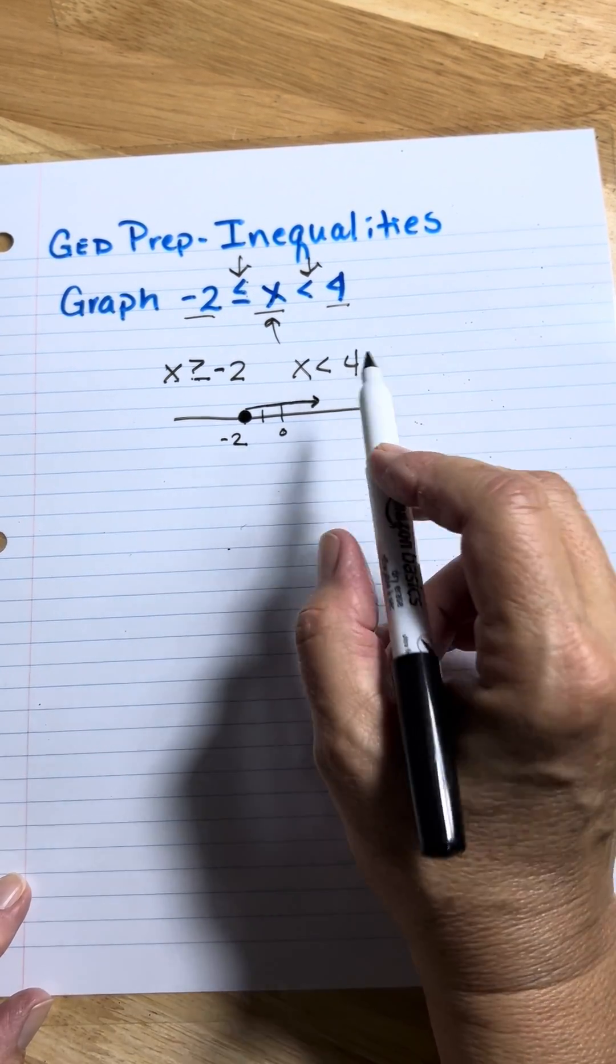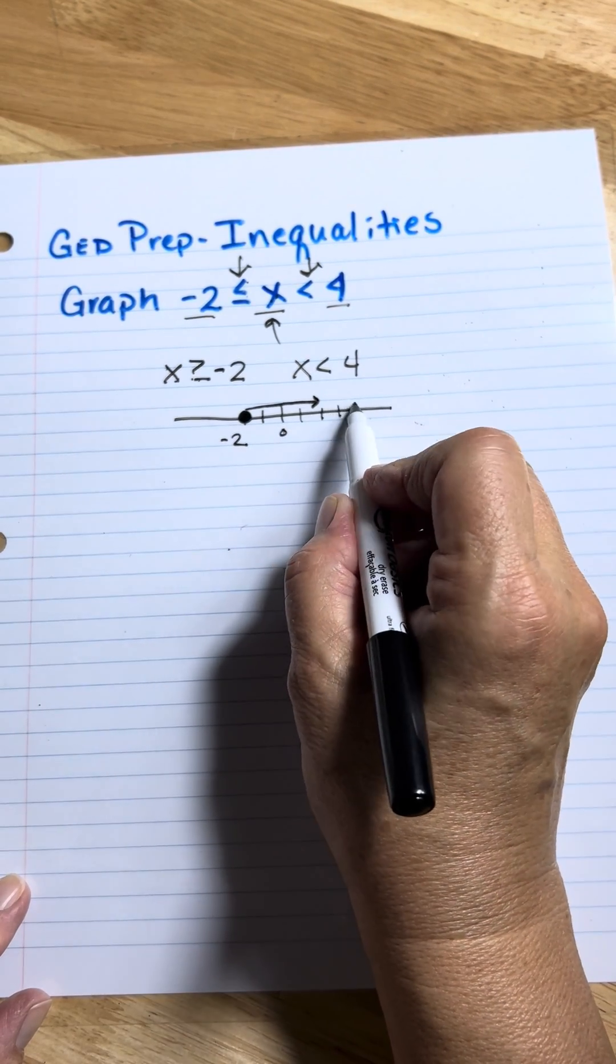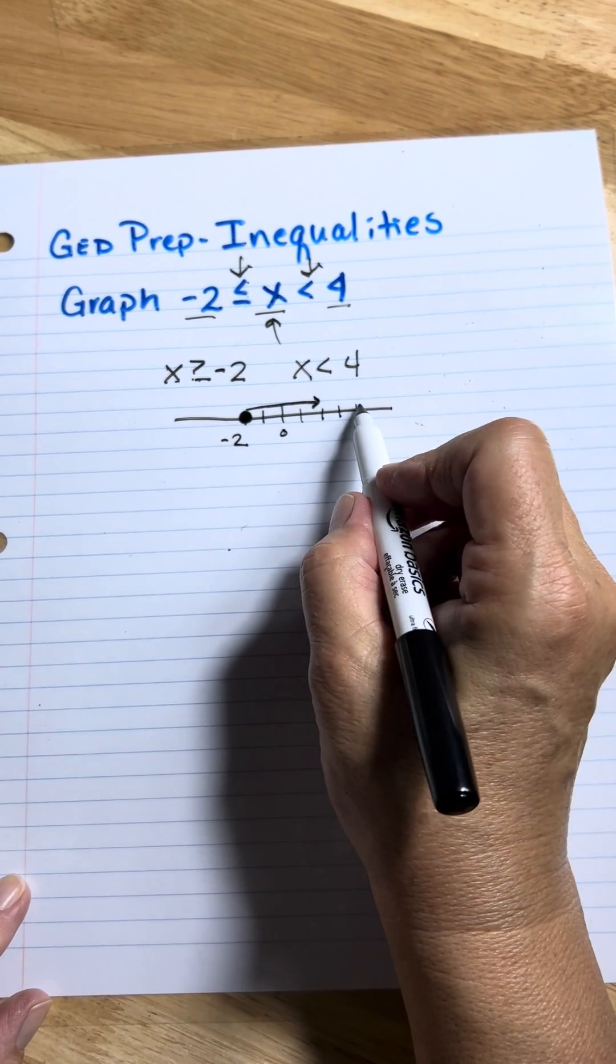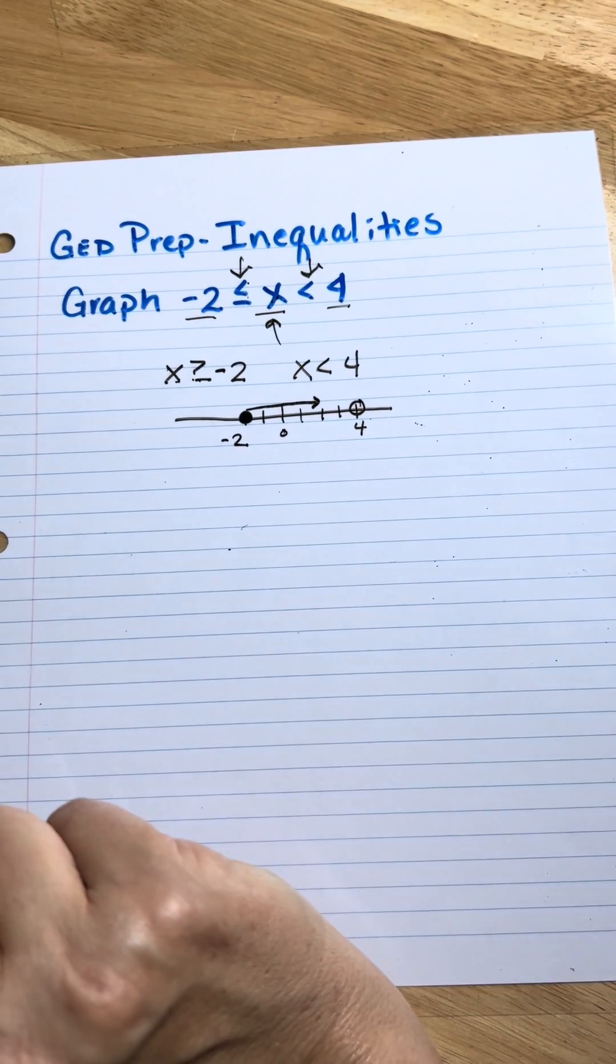Alright, now let's look at the next one. X is less than 4. So let's go to the point 4. Now since this is just less than, it's going to be an open circle here.